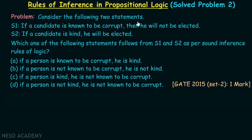Consider the following two statements. S1: if a candidate is known to be corrupt, then he will not be elected. S2: if a candidate is kind, he will be elected.